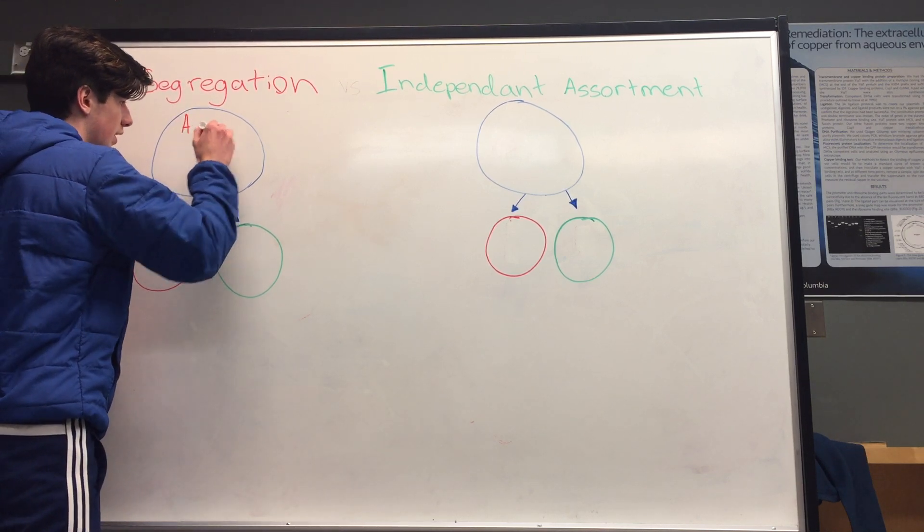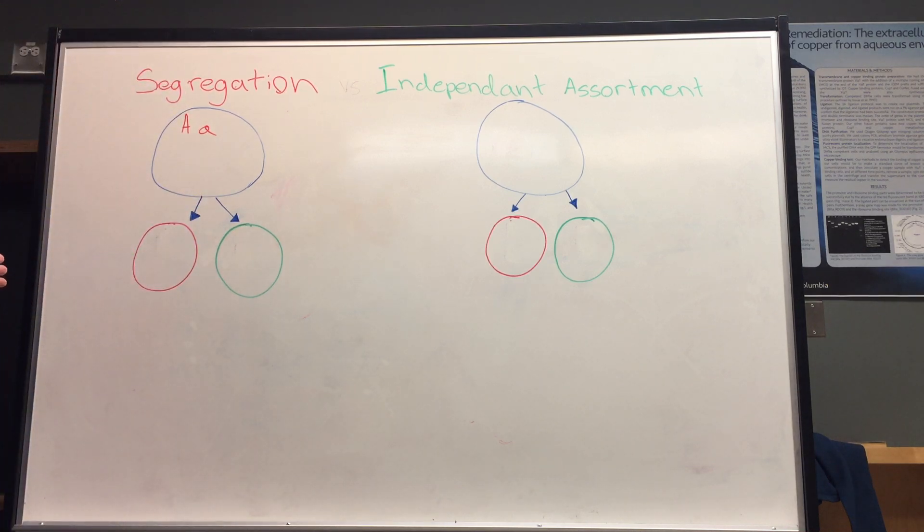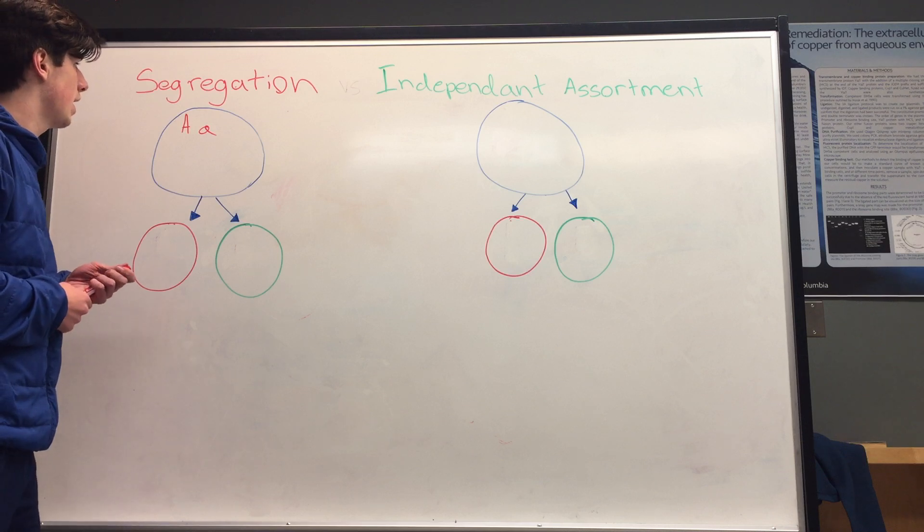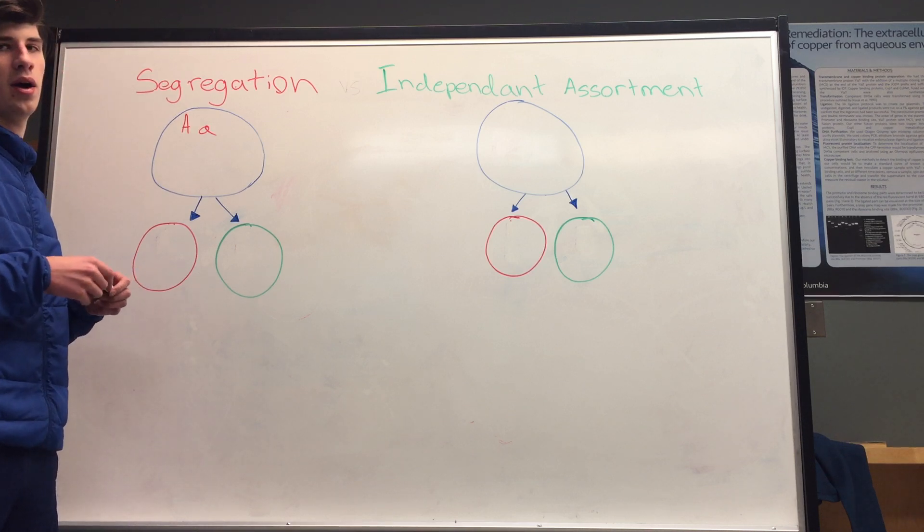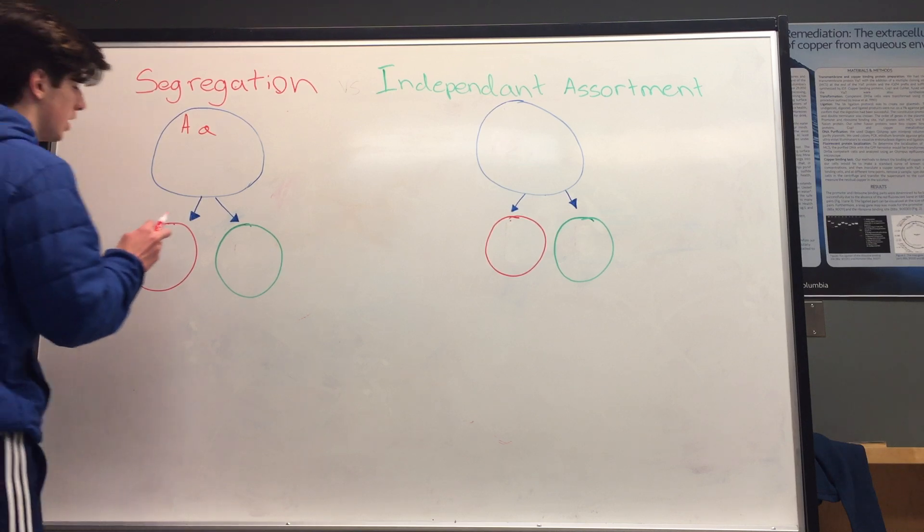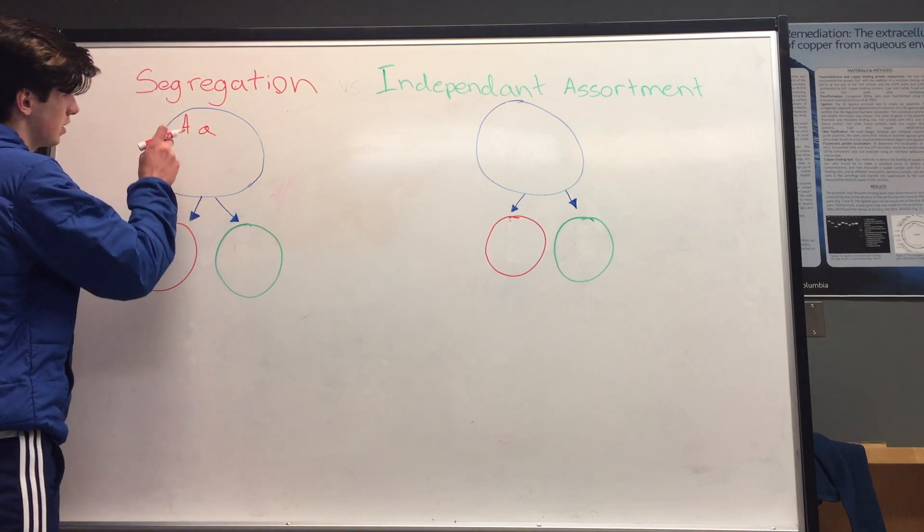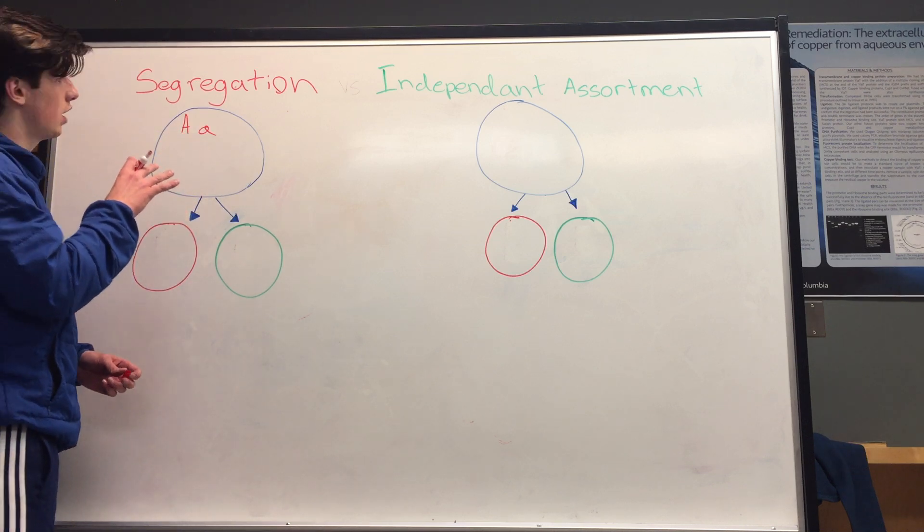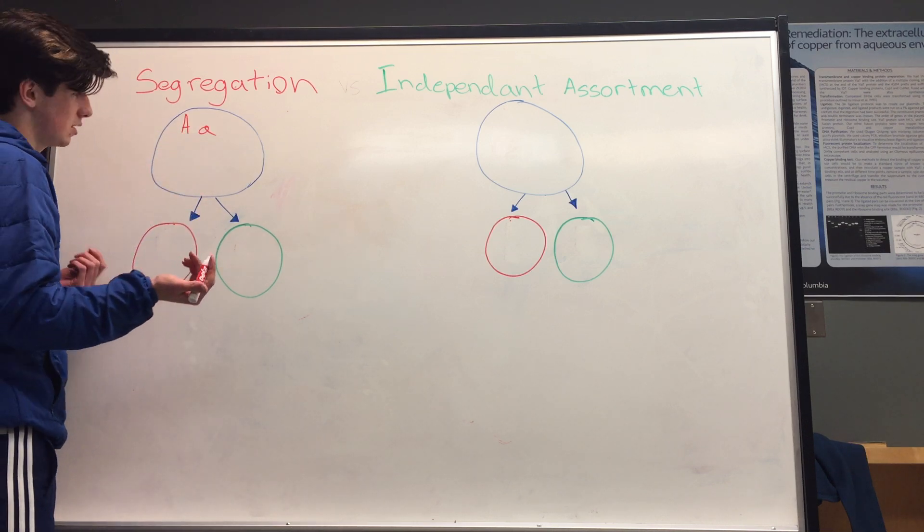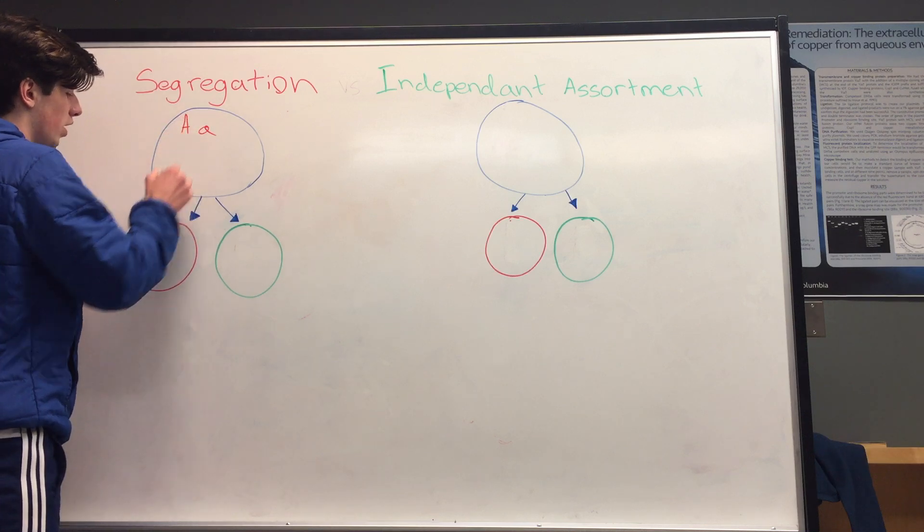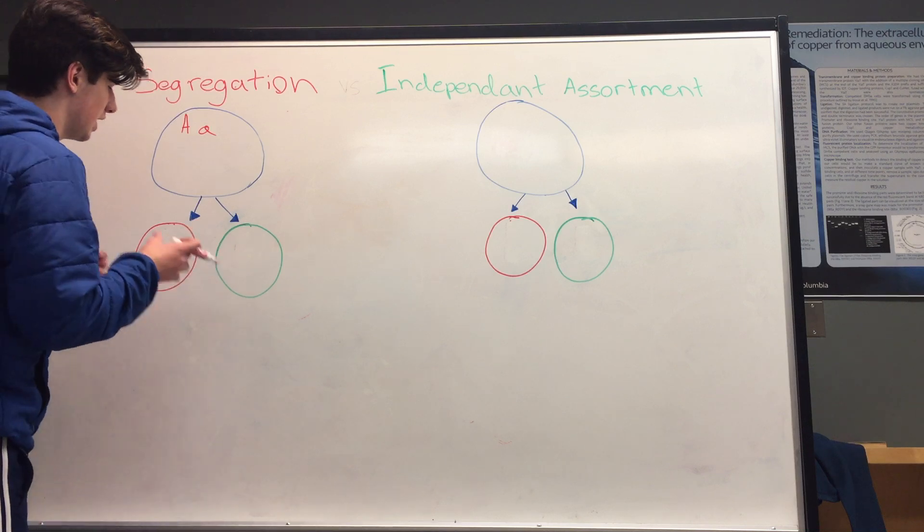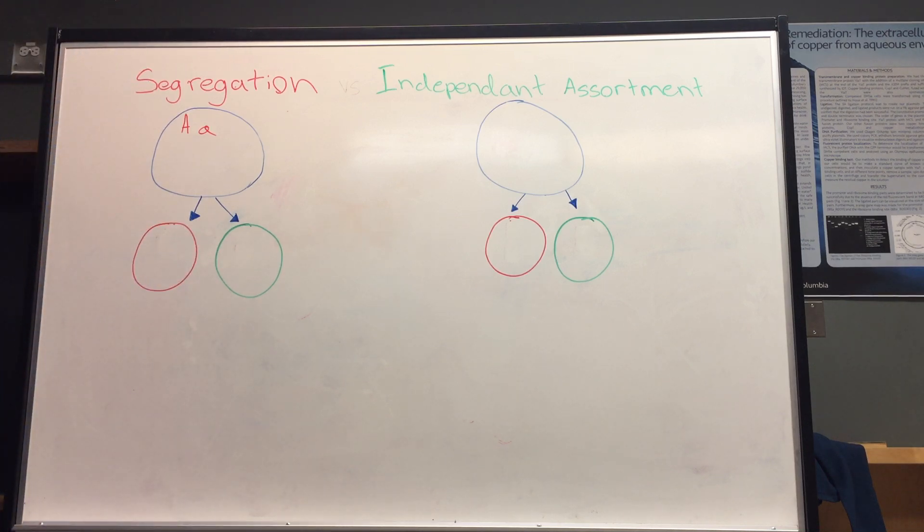Let's write something down. Let's have big A and little a as our two alleles for a specific characteristic. Now segregation states that during meiosis when gametes are formed, one of these two alleles segregate into two different gametes. That's basically all it's saying—that one allele is going to go into that gamete and one allele is going to go into that gamete, therefore causing an even distribution of genetic material or alleles.